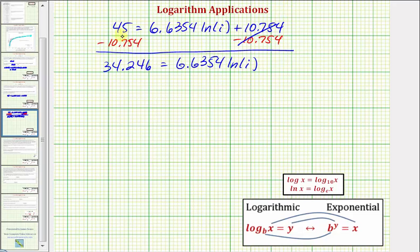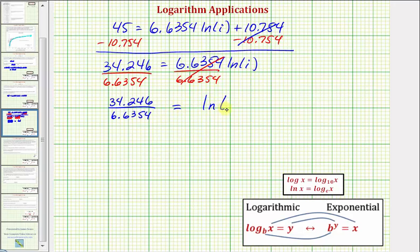So now to isolate natural log I, we'll divide both sides by 6.6354. Notice on the right side, this simplifies to one. We don't want to find this quotient and then round again later because that will give us more of an error. So we'll leave this as a quotient for right now. 34.246 divided by 6.6354 equals natural log I.